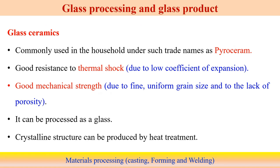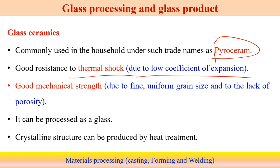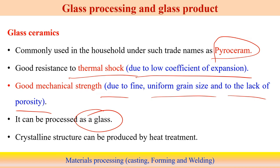Glass ceramics are commonly used in households — the trade name Pyroceram is one example. Glass ceramics have very good thermal shock resistance because ceramics have a low thermal expansion coefficient. Good mechanical strength is another feature, achieved due to very fine uniform grain size and lack of porosity. Glass ceramics can be processed like glass, but if they produce a crystalline structure, heat treatment operations can also be performed.